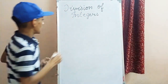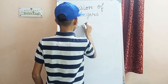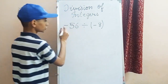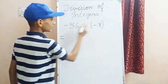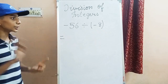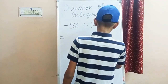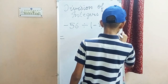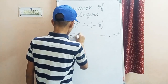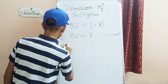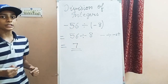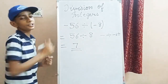One more example: minus 56 divided by minus 8. Here we have two minus signs. Minus divided by minus is always plus. So we simply do 56 divided by 8, which gives 7. The answer is plus 7. This is how we apply the rules of division of integers.